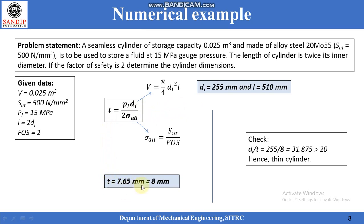Another unknown is the inner diameter. However, the volume of the cylinder is known and the formula for volume is (π/4)·di²·l. Since there are two unknowns, di and l, but a relationship exists between them (l = 2·di), there is effectively only one unknown. Solving gives inner diameter di = 255 mm and length l = 510 mm. Substituting all known values into the thickness formula gives t = 7.65 mm, approximately equal to 8 mm. Finally, the ratio di/t = 31.875, which is greater than 20, confirming the assumption that this is a thin cylinder. The problem is solved.